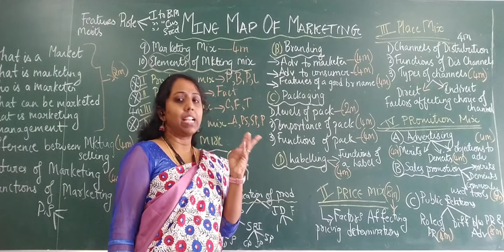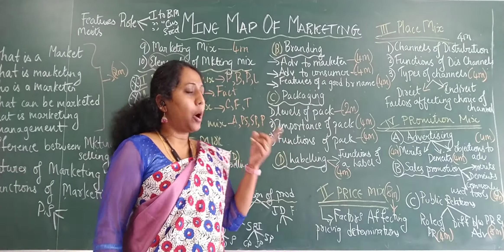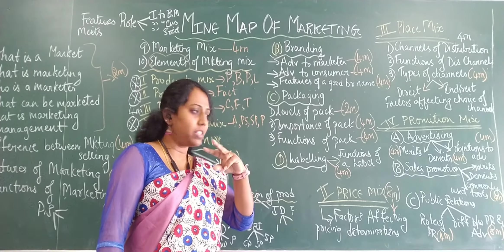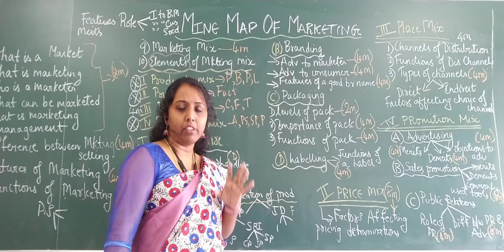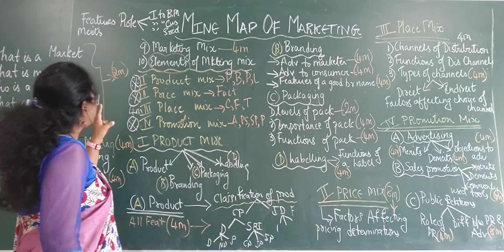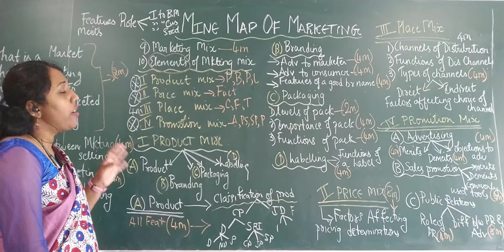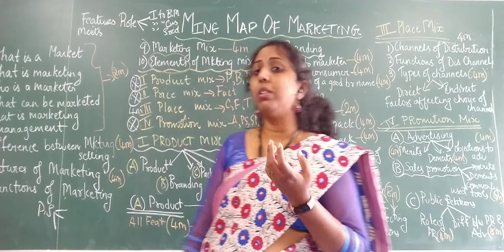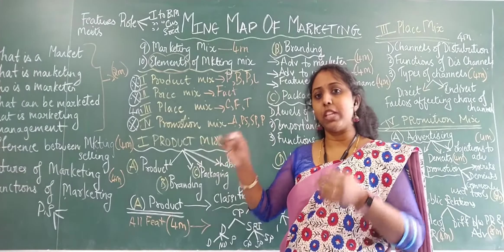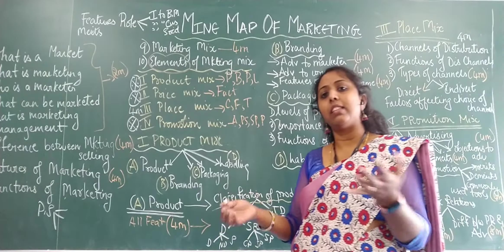Promotion mix is divided into advertising, personal selling, sales promotion, and public relations. Advertising is divided into merits, demerits, and objections to advertising. Sales promotion has merits and demerits — learn two points each — and the commonly used sales promotion tools, which is a four marker or indirect question. Personal selling has features, meaning, merits for two marks, and role of personal selling — importance to business, to customer, and to society — for eight marks, either four plus four.